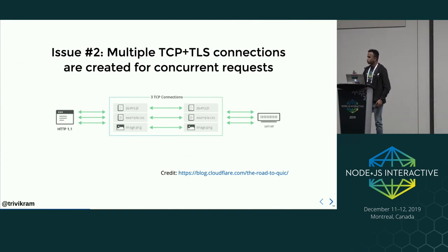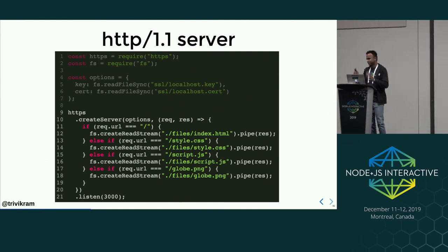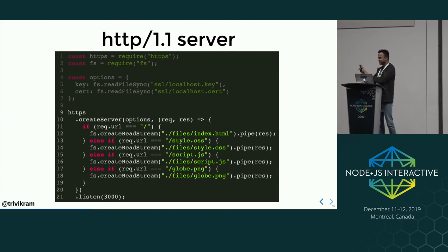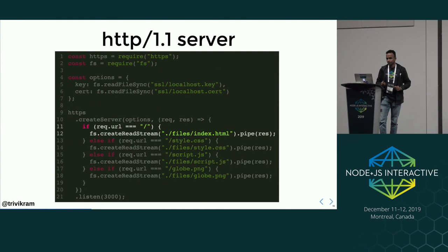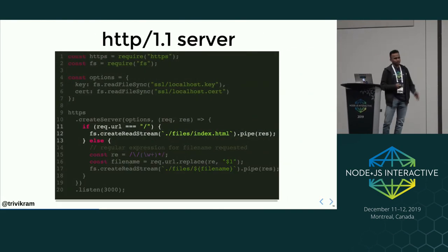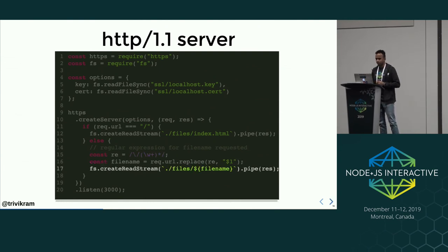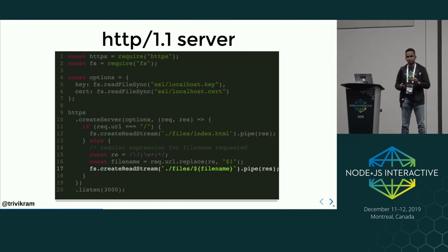Let's understand this by going through the code. We write a normal HTTP create server. If the request URL is slash, return index.html; otherwise a regular expression reads the file name and returns that file from the files folder. The index.html imports a stylesheet at the top, an image in the body, says hello world, and then imports a script. The script finds the name element and changes it to Node.js Interactive, and changes the globe image to a Node.js Interactive image after a one-second timeout.